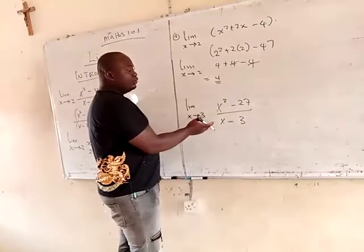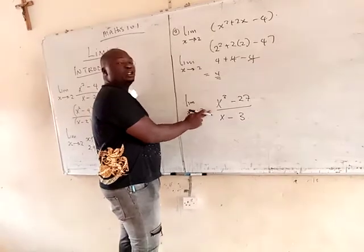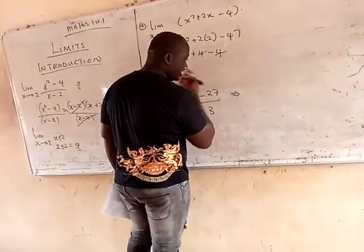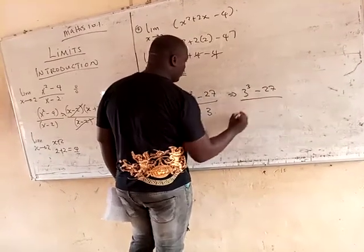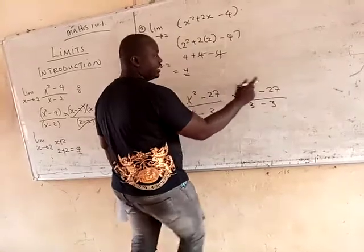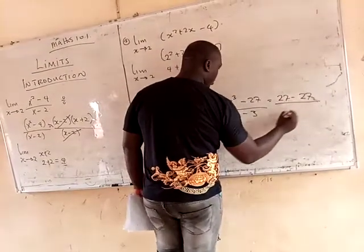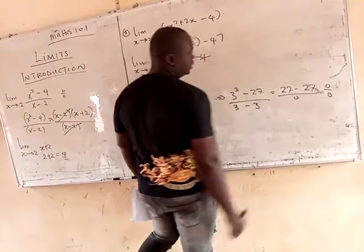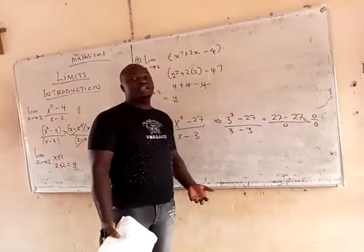For example, let me say I use direct substitution here. If I use direct substitution on this question, it will give me: using direct substitution, you have 3 cubed minus 27, all over 3 minus 3. And 3 cubed is 27, so 27 minus 27, all over 0. So this is 0/0, which is undefined.